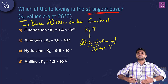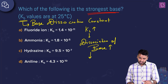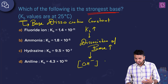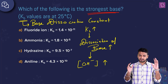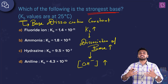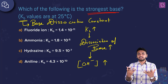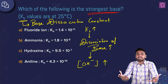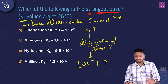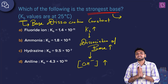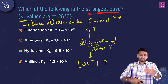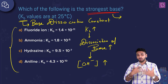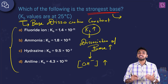If the base is going to dissociate more, then the concentration of hydroxide ions is going to be more. A base is something which provides OH⁻ ions, and the strongest base is something which provides more OH⁻ ions. For that, the Kb value should be the highest.